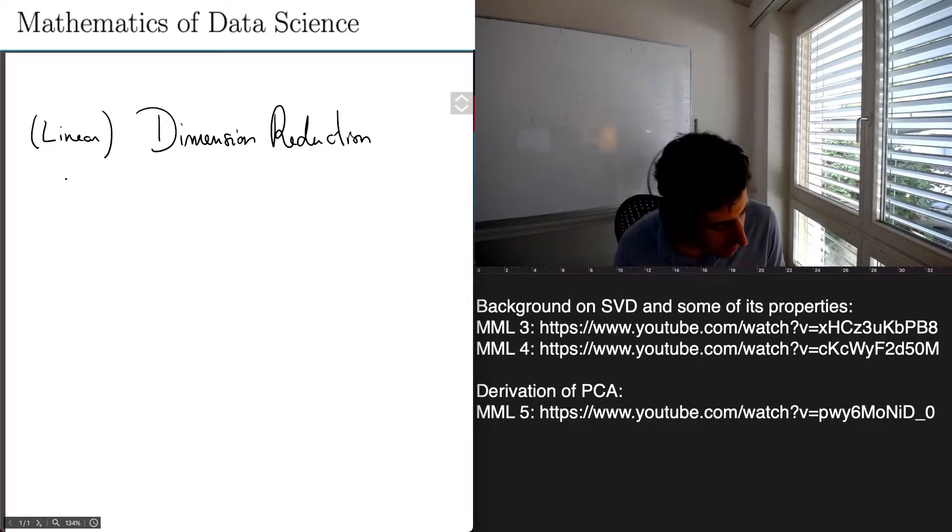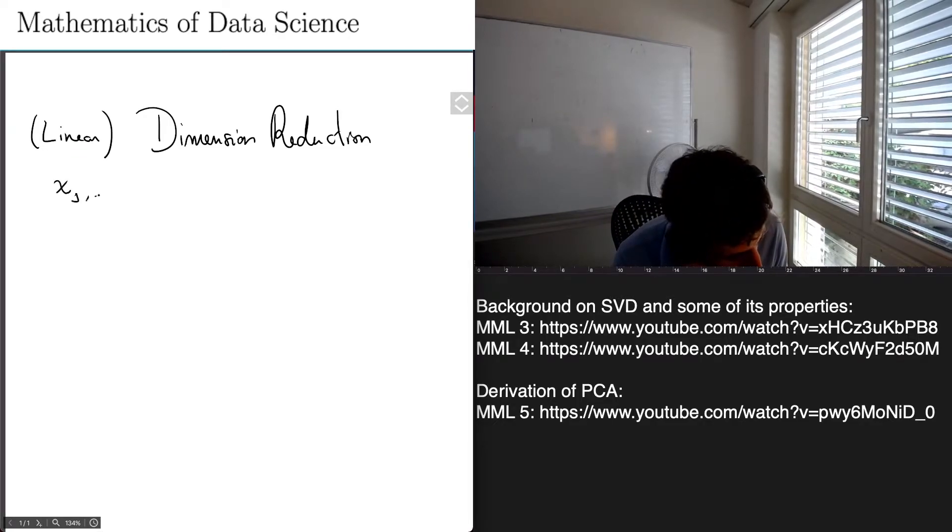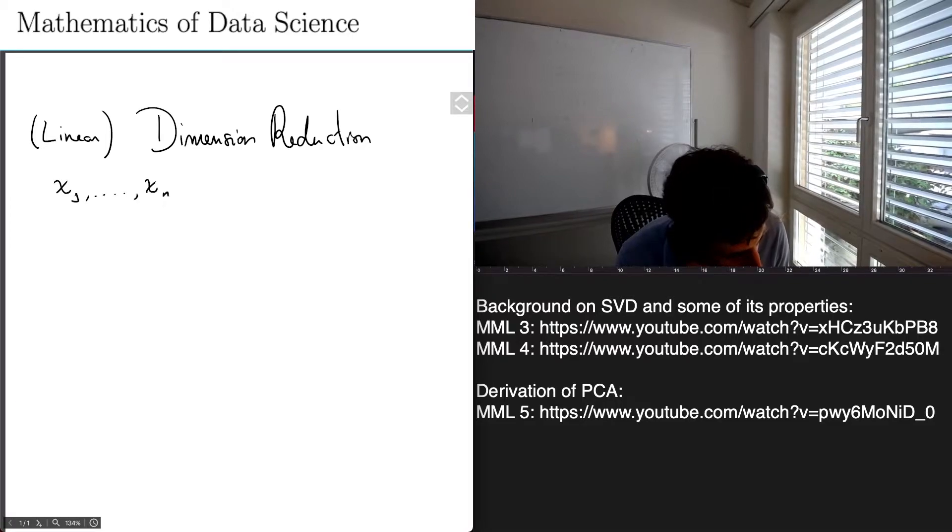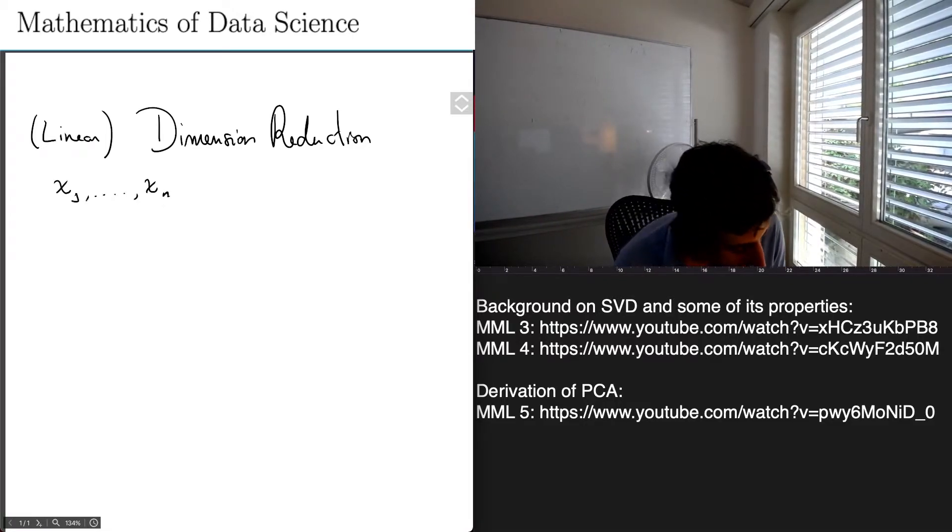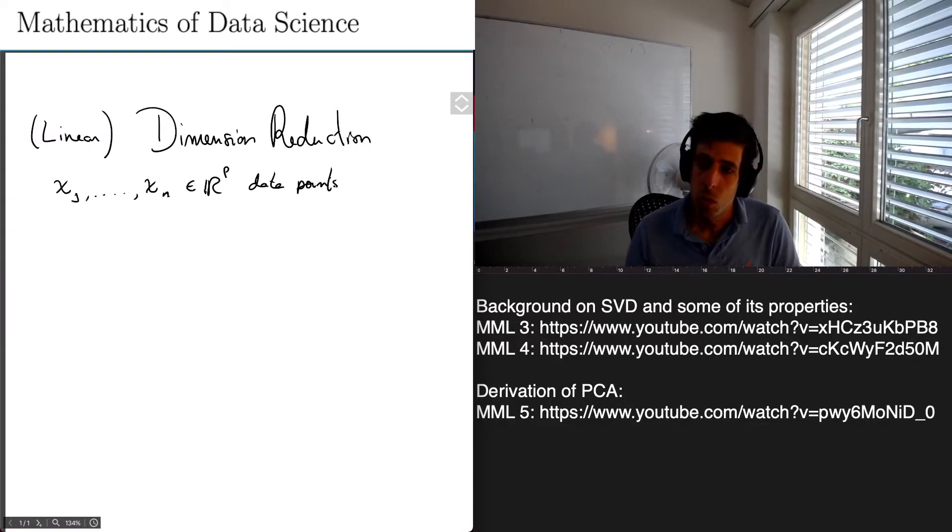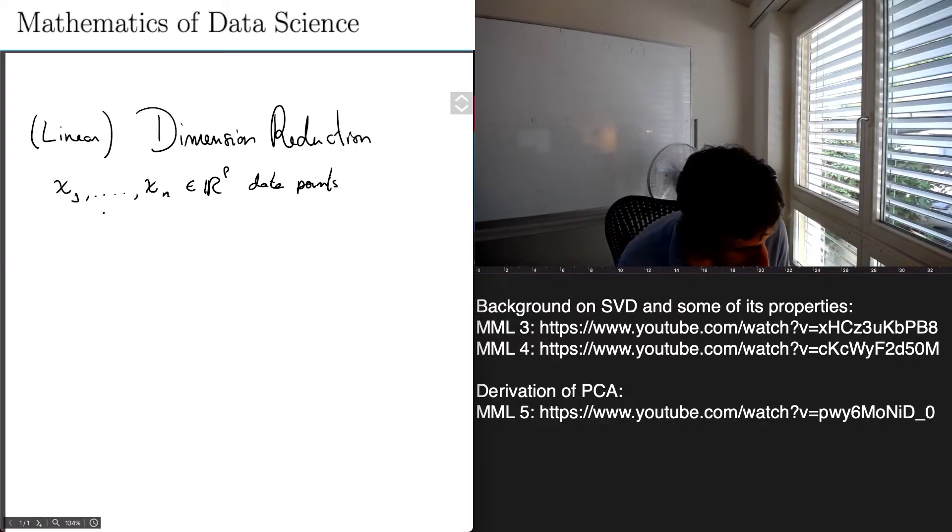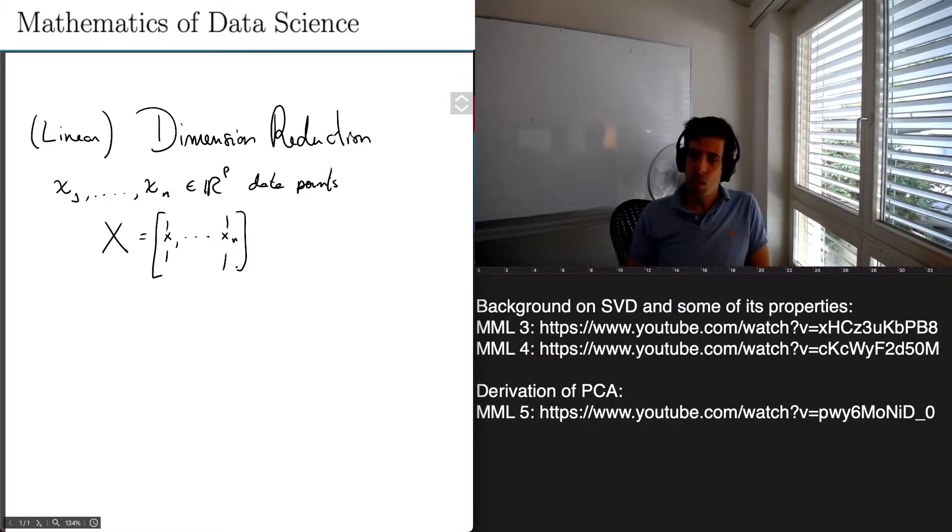And the idea is that when we have x1 to xn, they are data points, say data points in R^p. It's going to be very useful to consider a matrix, say a matrix X, of these data points: X equals x1 and so on to xn. And the point is that properties of this matrix are going to tell us a lot about properties of the data.